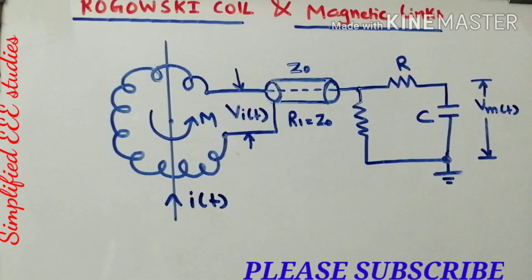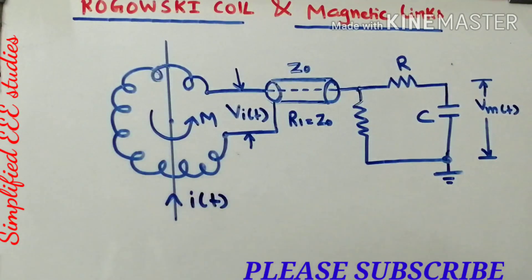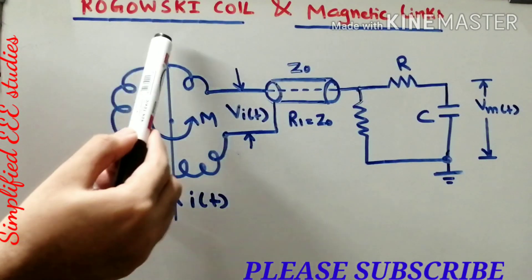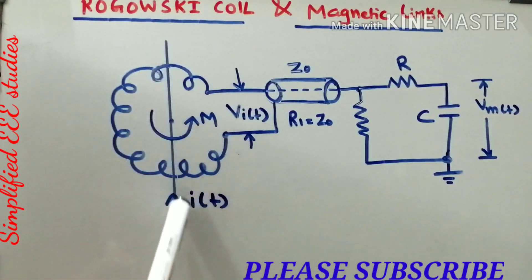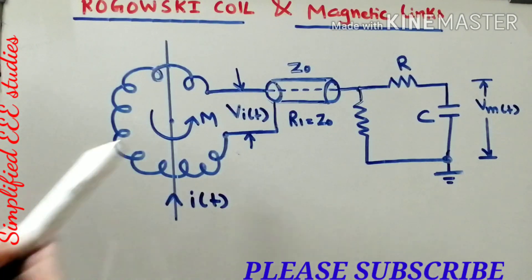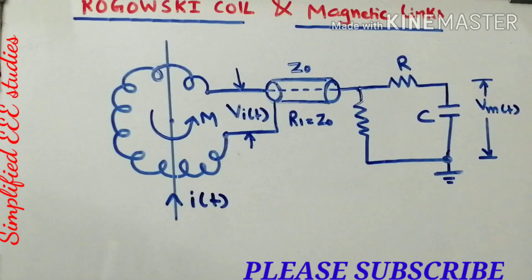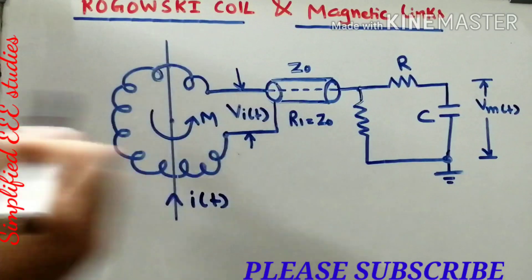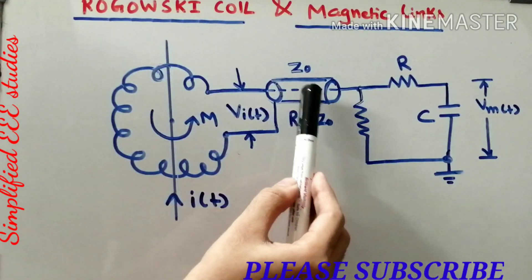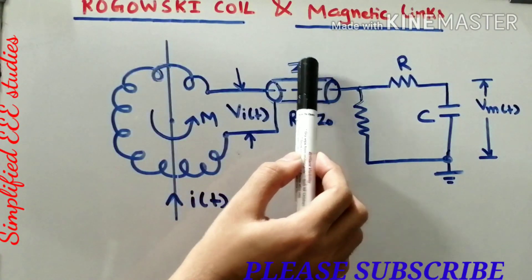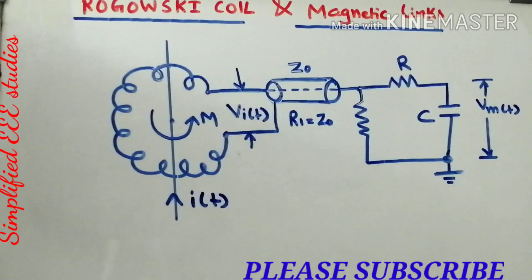Let us see the schematic diagram of the Rogowski coil for the measurement of impulse current. Here you can observe the current carrying conductor. I(t) is the current passing through it. The Rogowski coil is an inductor coil with a circular shape — basically a toroid. We also have a delay cable with surge impedance Z0, and a meter which may be a CRO or DSO.